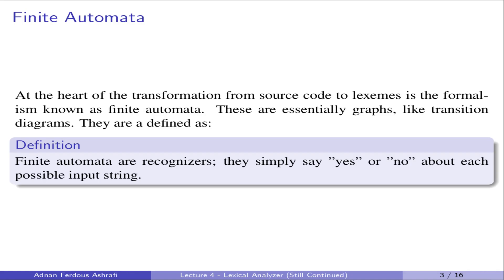Finite automata can be defined as recognizers — they simply say yes or no about each possible input string. The word 'automata' relates to automating something, managing conditions. It is called 'finite' because there is always a finite number of states or a finite number of conditions that we can check in an automata. That's why we call it a finite automata.